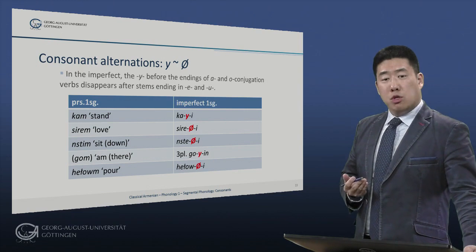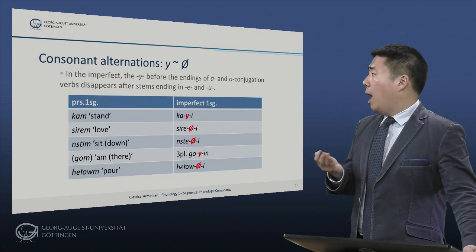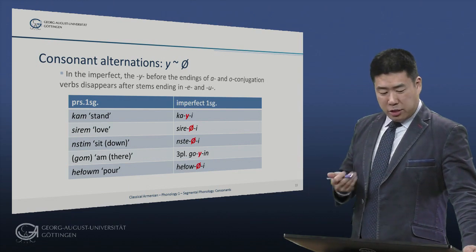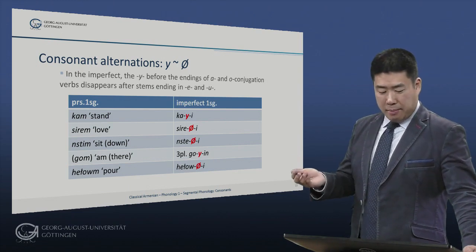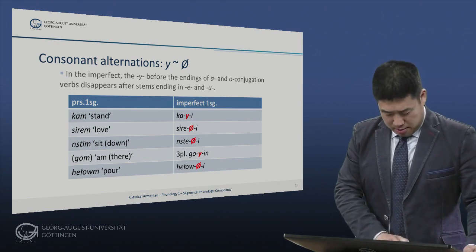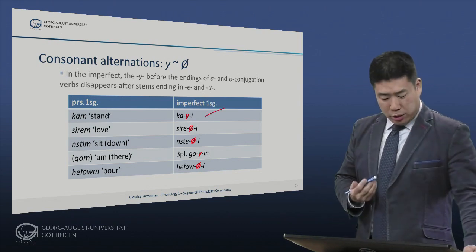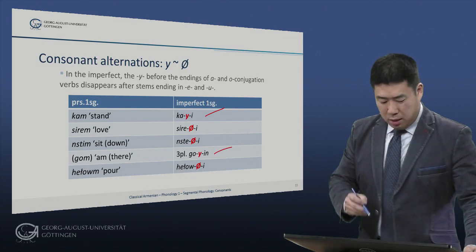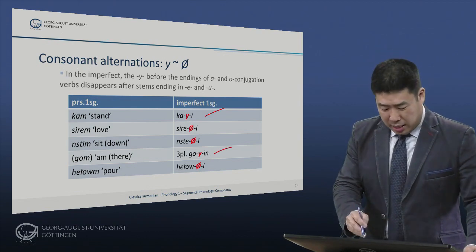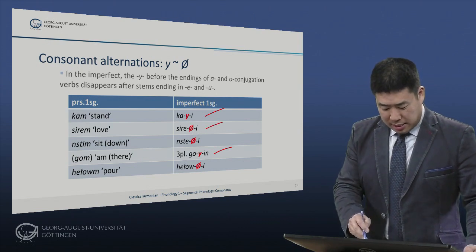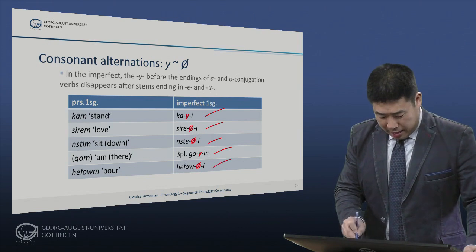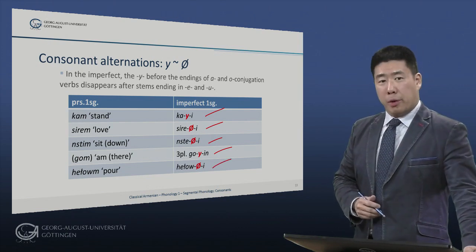This is also apparent in the imperfect, where the Y before the endings of A and O conjugation verbs disappears after stems ending in E or U. So we have 'kai' meaning 'I was standing', we have 'goyin' meaning 'there were / there existed', but 'sirayi' meaning 'I loved', 'nistei' meaning 'I sat down' or 'was sitting down', and 'heui' meaning 'I was pouring'.